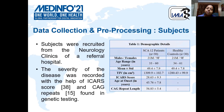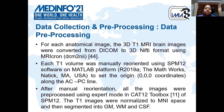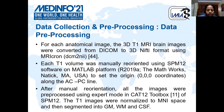For data collection, subjects were recruited from the neurological clinic of a referral hospital. The severity of the disease was recorded with the help of ICARS score and the CAG repeats found in genetic testing. The demographic details of the patients and controls used in the study are given. For data pre-processing, each anatomical image in DICOM format was converted to 3D NIfTI format using MRIcron. Each of these T1 volumes were then manually reoriented using SPM-12 software to set the origin along the AC-PC line. After manual reorientation, all images were pre-processed using the expert mode in CAT-12 tools. The T1 images were normalized to MNI space and were segmented into gray matter, white matter, and CSF.